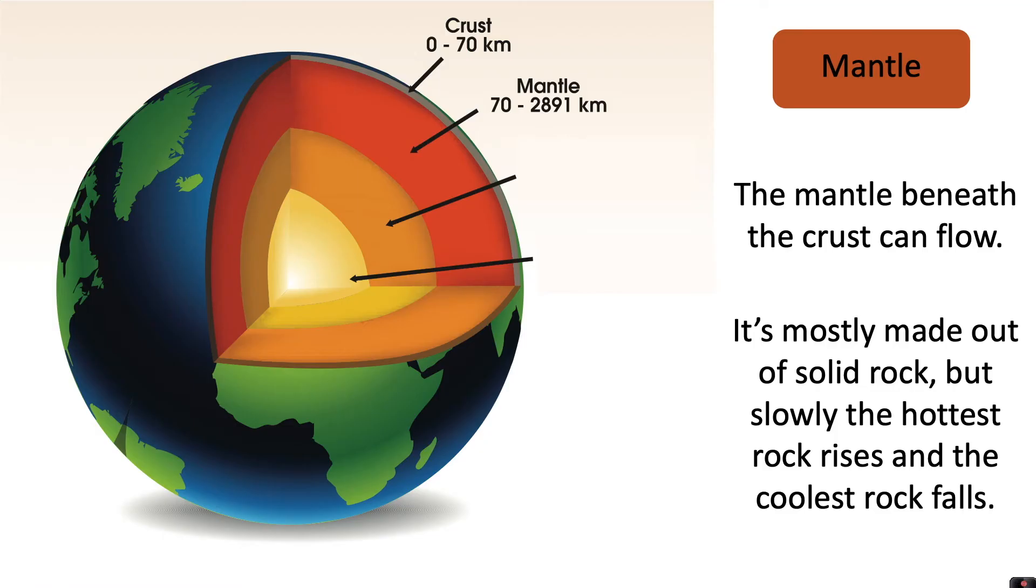The mantle beneath the crust can flow. It's mostly made out of solid rock but slowly the hottest rock rises and the coolest rock falls. So in the mantle we've got a slow flow of convection currents of this hot rock.